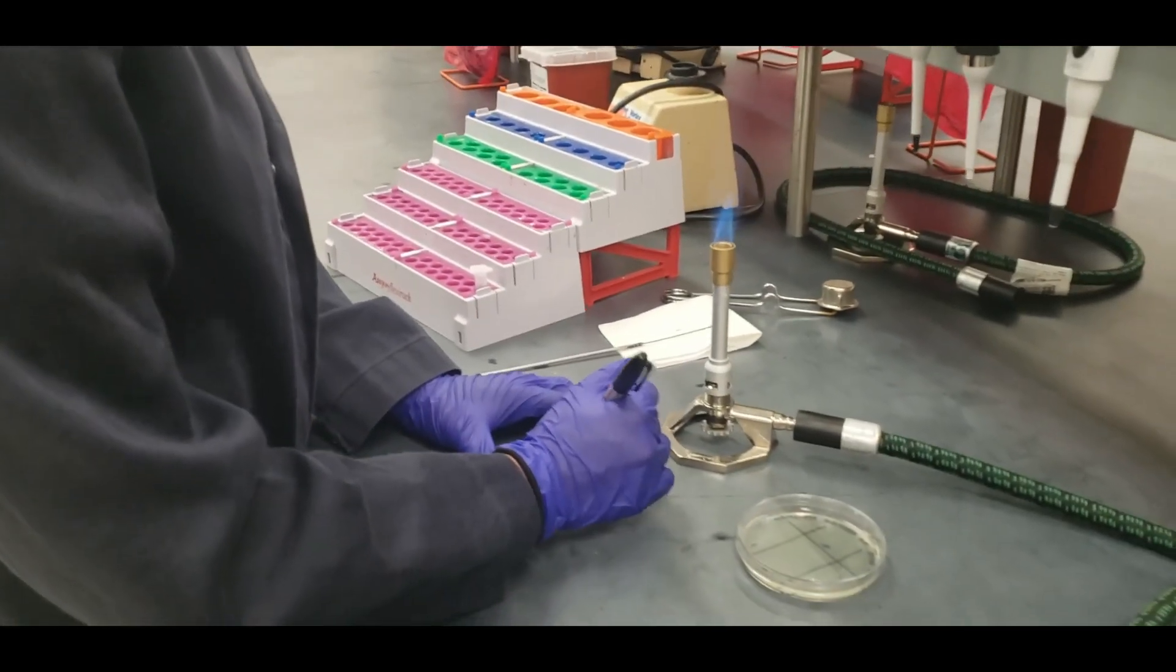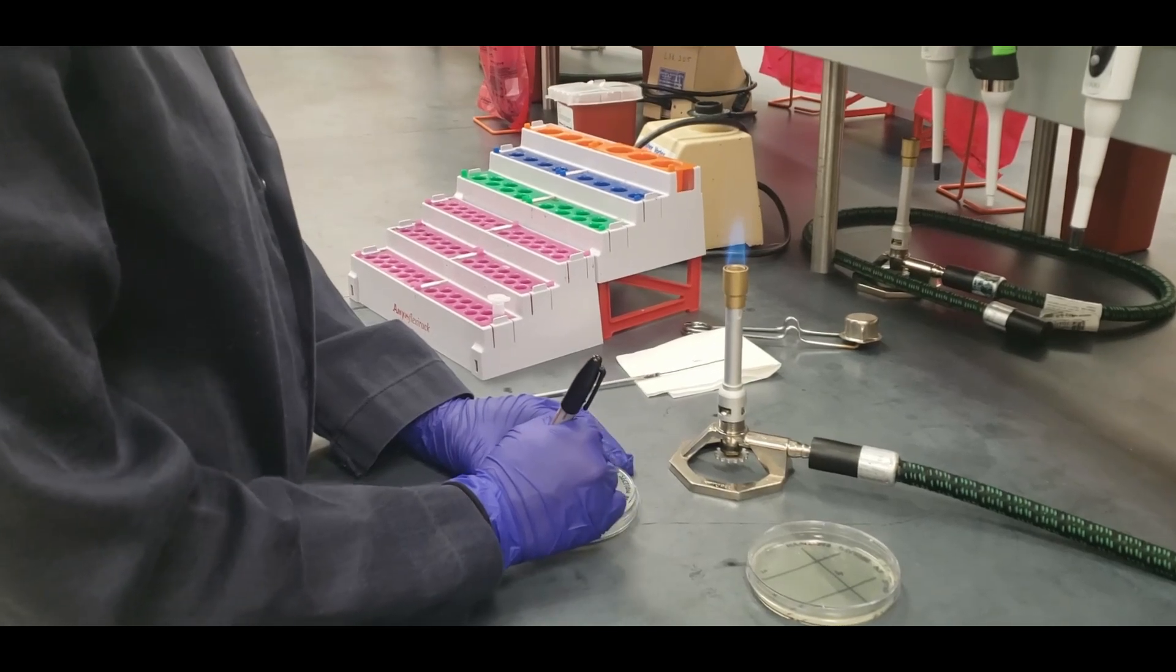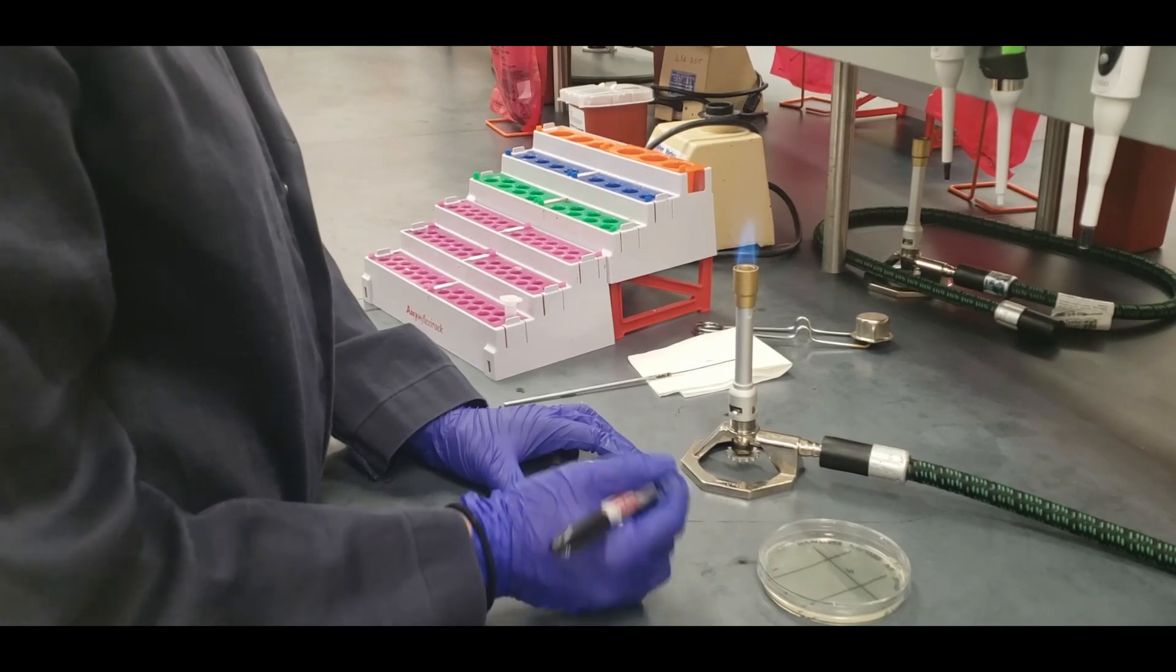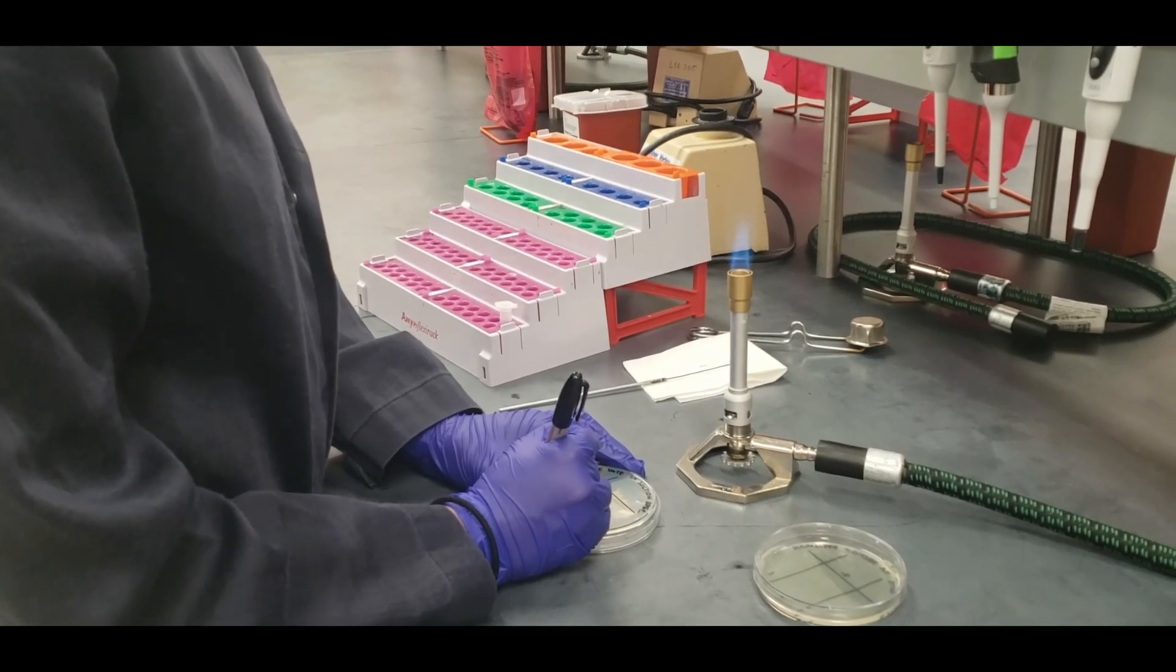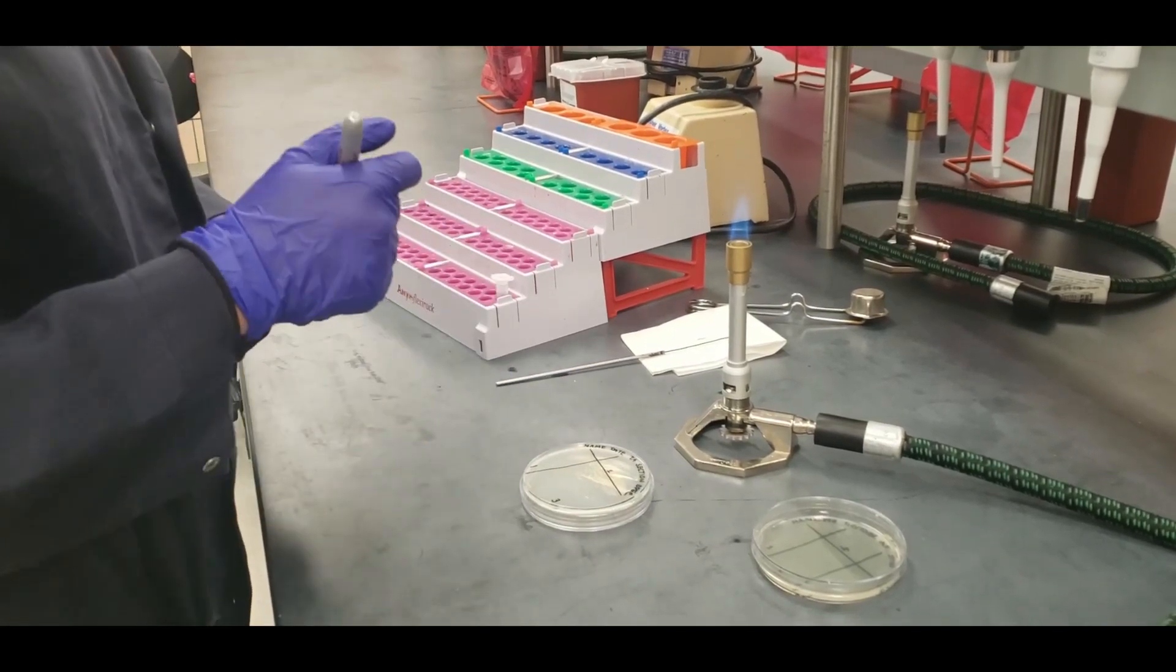Next thing, this is totally optional, but you can draw the sections on the bottom of the plate and label them 1, 2, and 3. Like I said, totally optional, but it can help you stay within the sections.